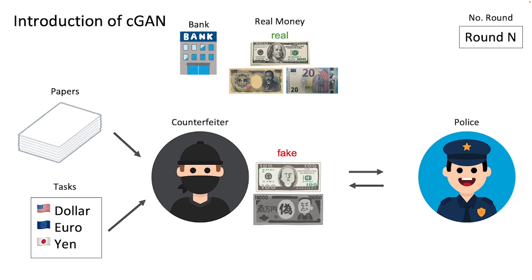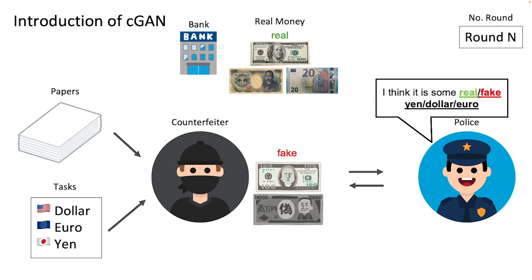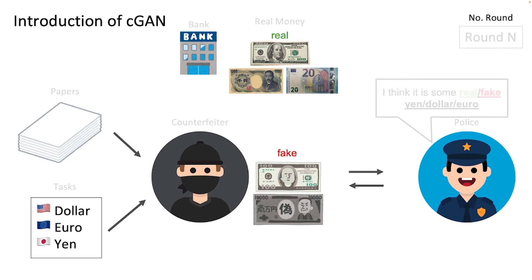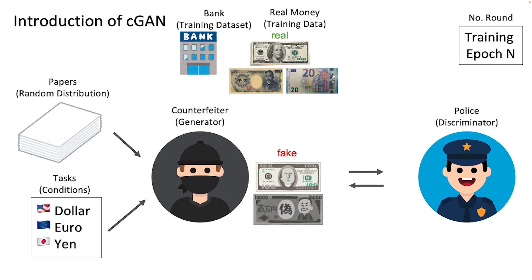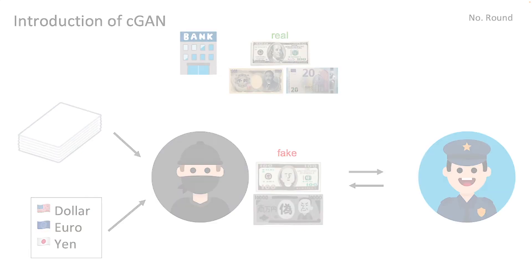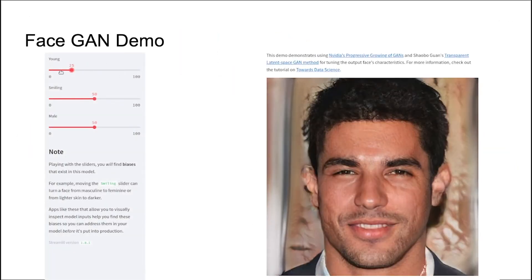As for the police officer, his job is now to identify fake and real money, and also classify which type of bill it belongs to. In this case, we call this type of network a conditional GAN. Different from the original GAN, we not only give the generator some noise, but also input a label to control the desired output. There is a demo about conditional GAN.